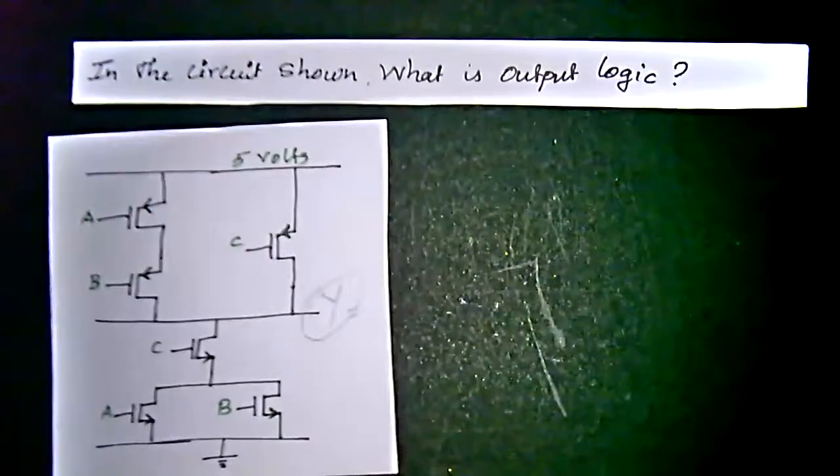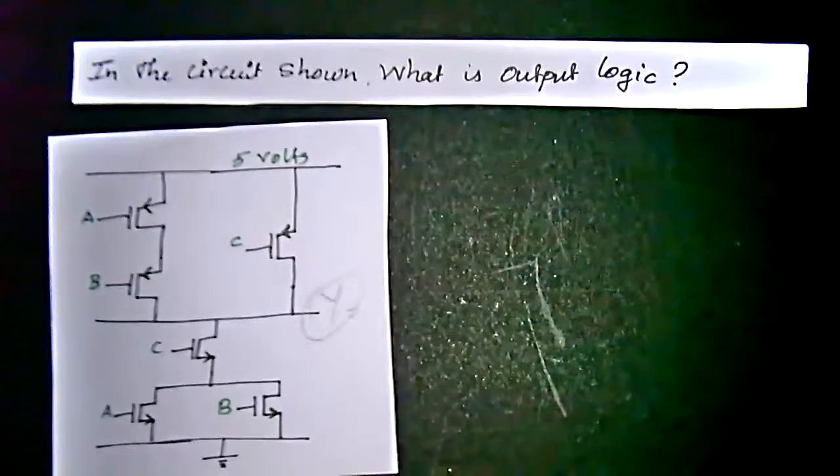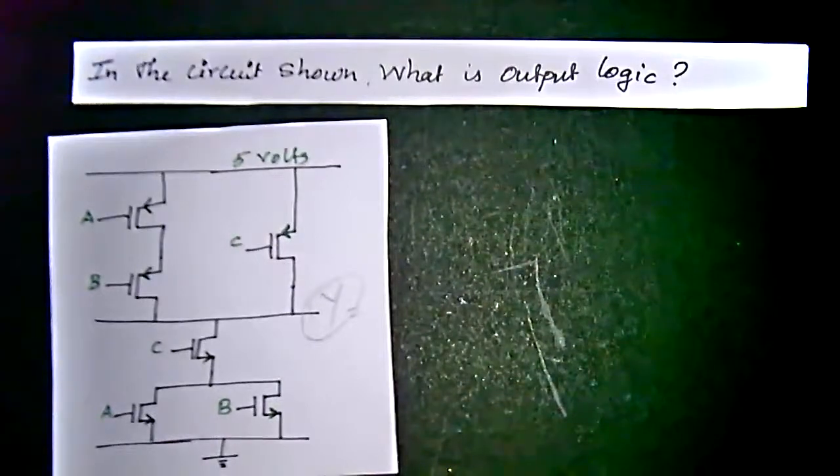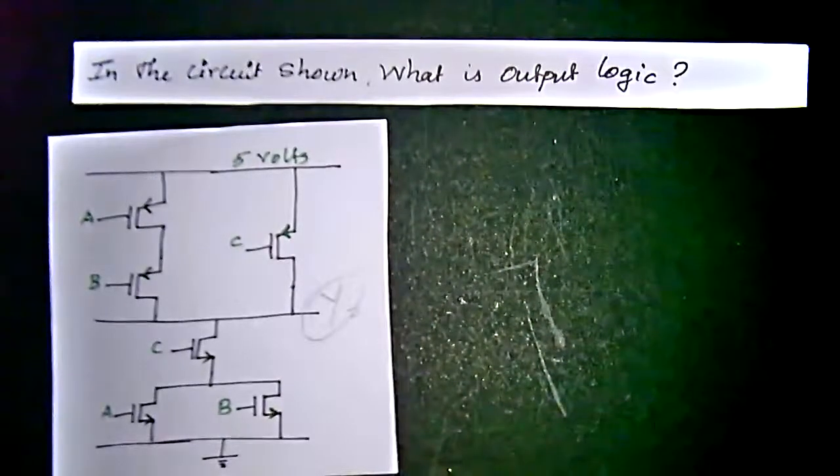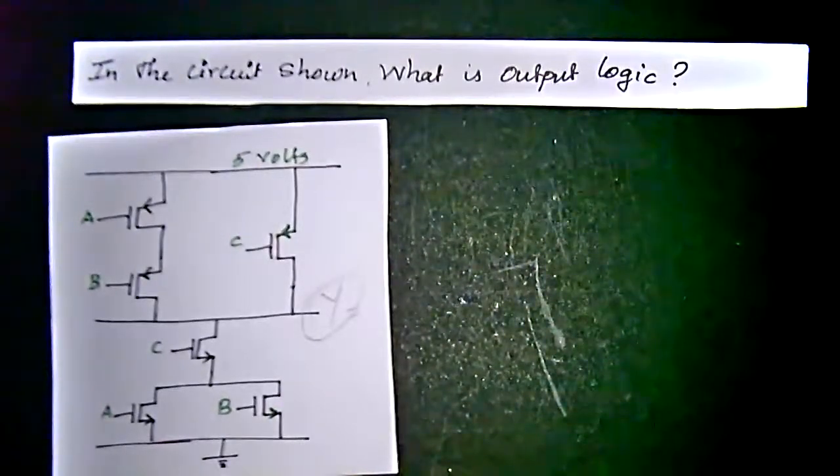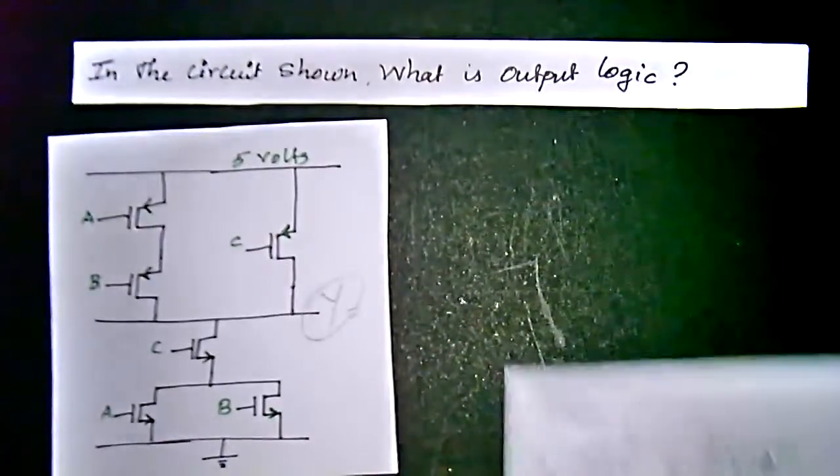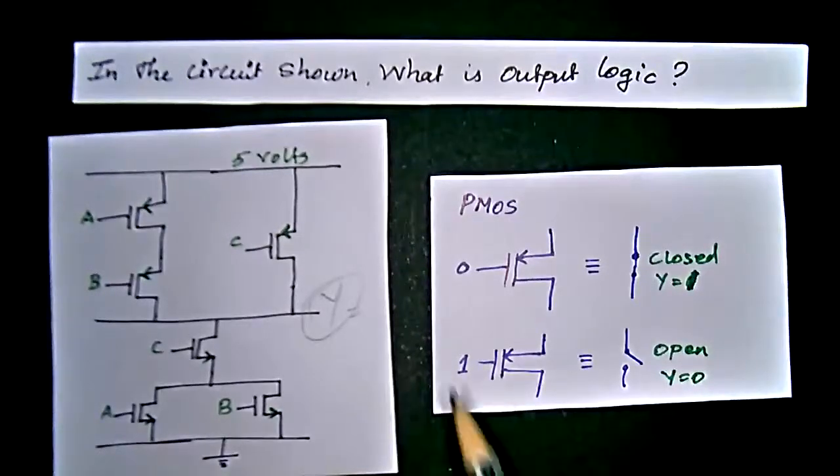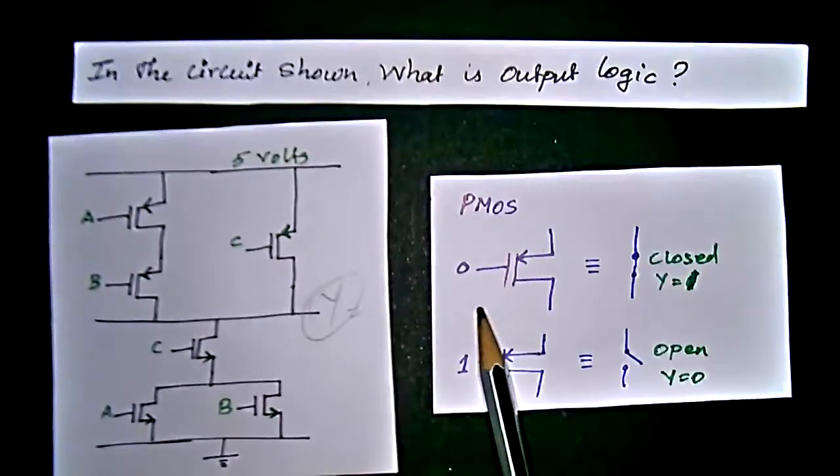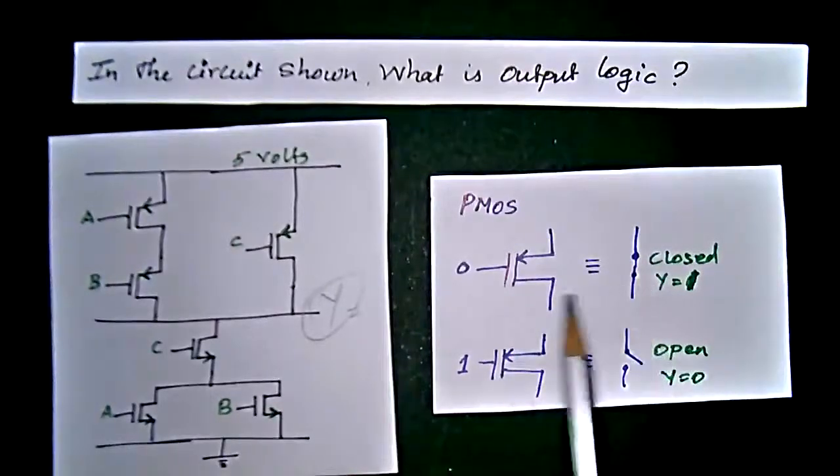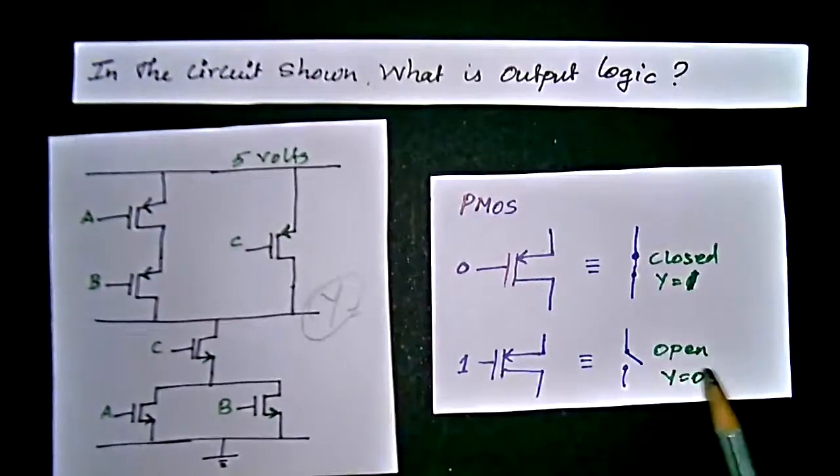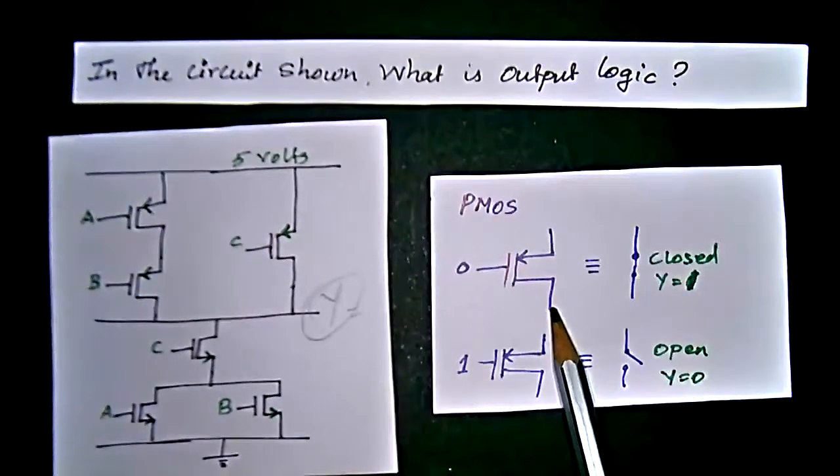So how we are going to find the Y value here? First of all we have to analyze, that is we have to get the knowledge of how the NMOS and PMOS will act when they are getting the logic values 0s and 1s. First we will see the PMOS value. When the PMOS getting the 0th value, that is input value as 0, that time the PMOS will act as the closed switch.